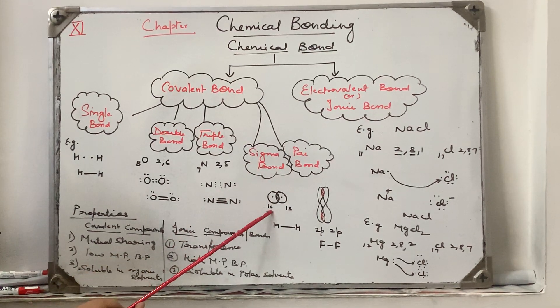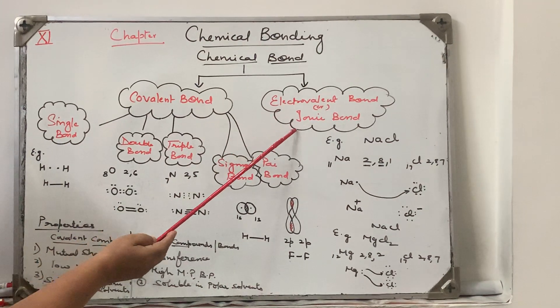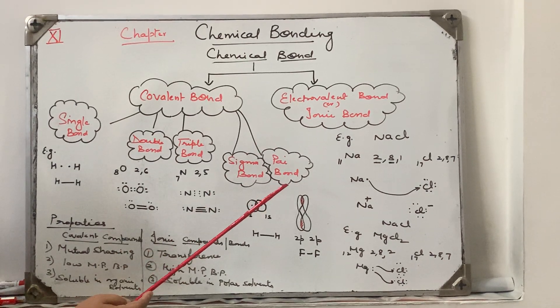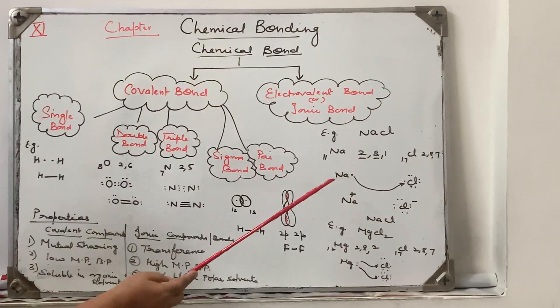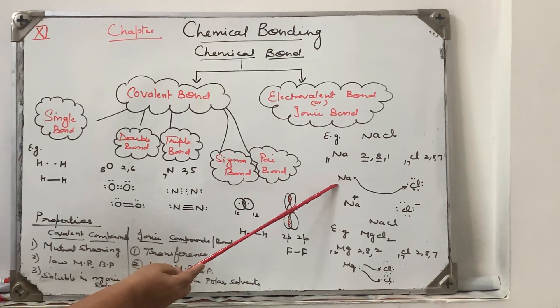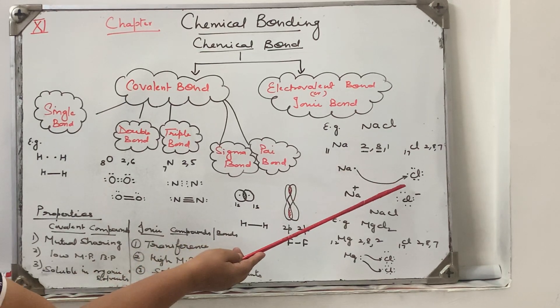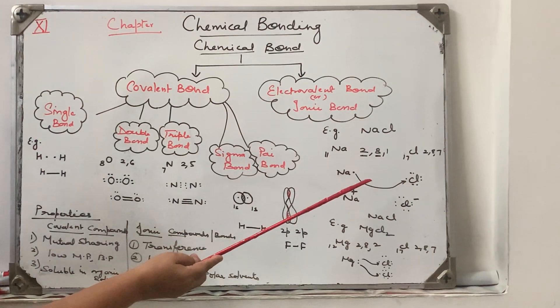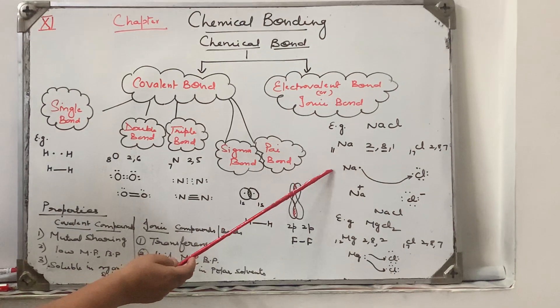Now we will discuss about the electrovalent bond or ionic bond. For example, sodium chloride. Sodium is having 11 atomic number, so 2,8,1. Only one electron will be contributed. It is not possible to gain seven electrons, so it's better to lose one electron. Chlorine is having seven electrons. It is really in need of one electron, so this electron will be shifted to chlorine, totally transferred.